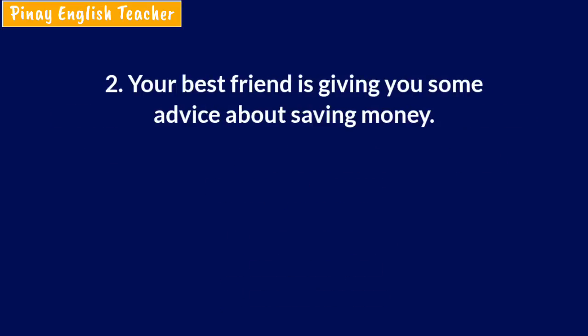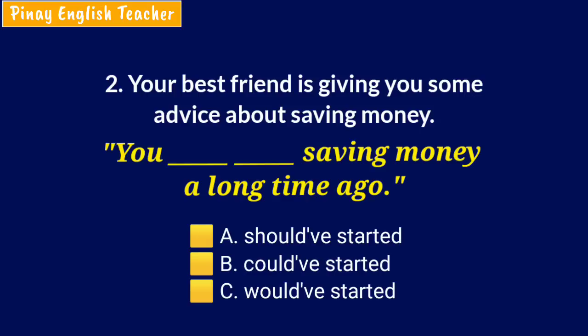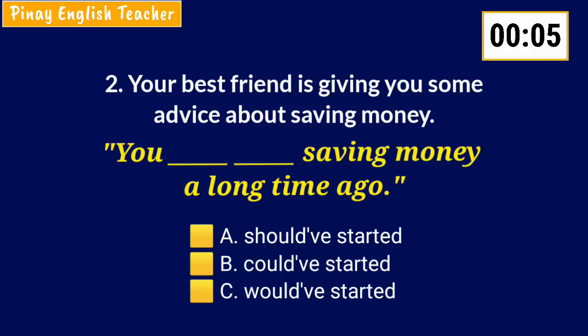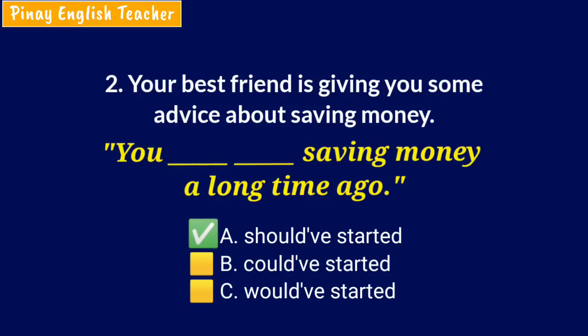Number two: The situation is, your best friend is giving you some advice about saving money. Now your best friend says: You blank saving money a long time ago. A. Should've started. B. Could've started. C. Would've started. The answer is A — should've started. It's about giving advice about an action that you didn't do in the past.